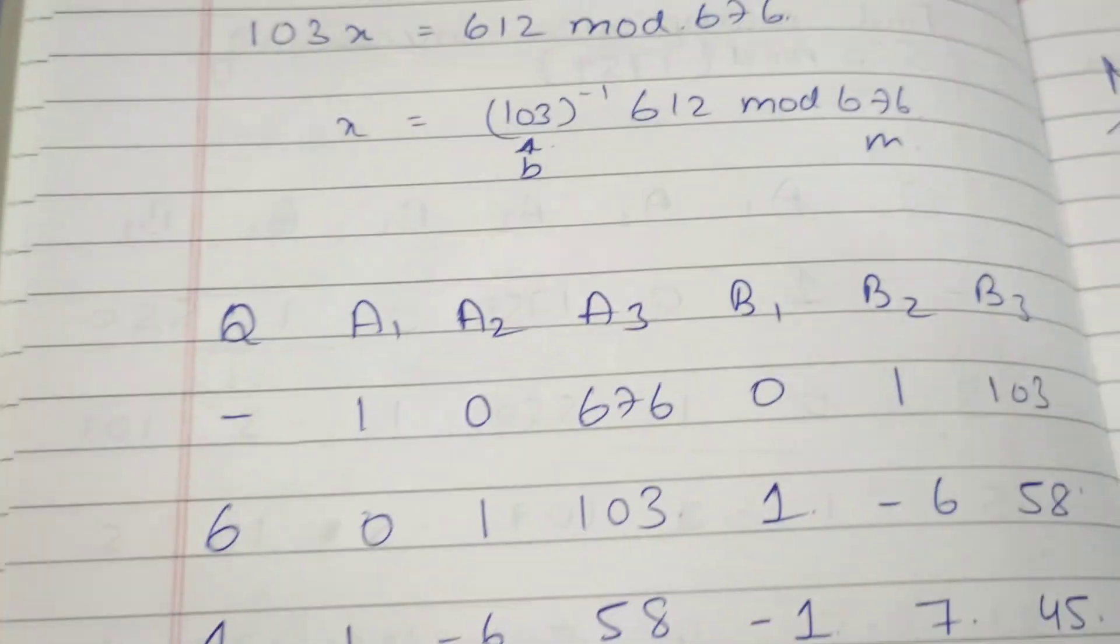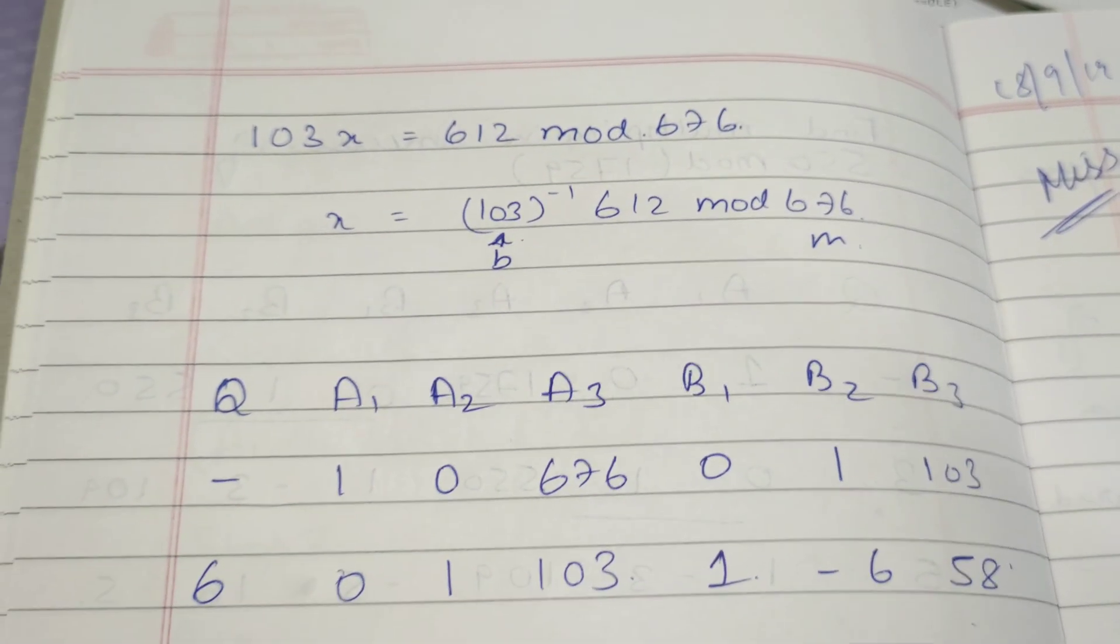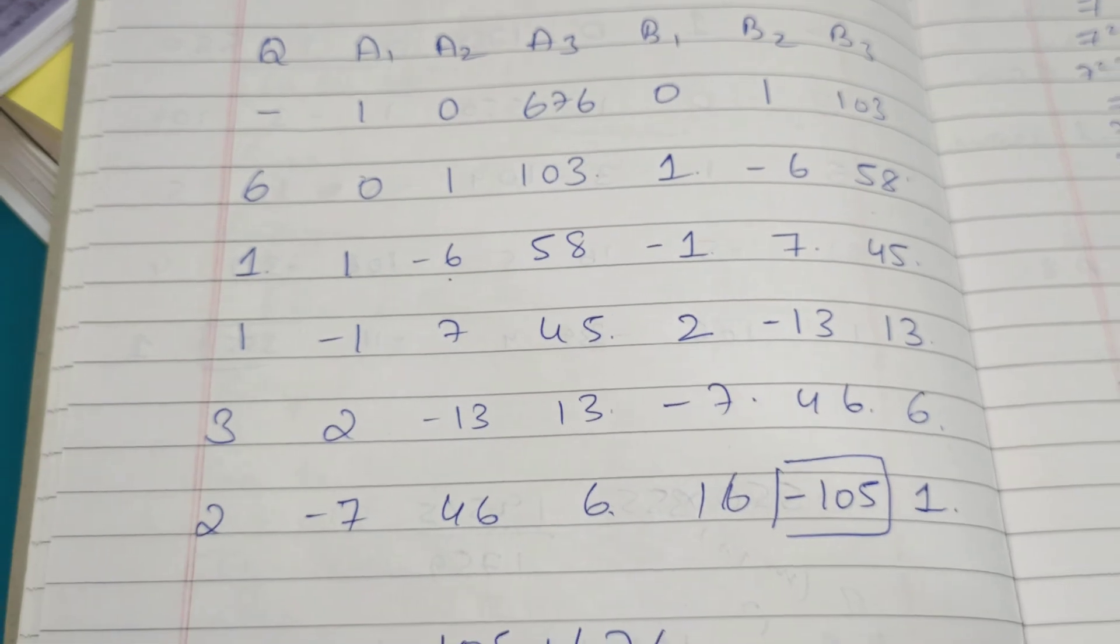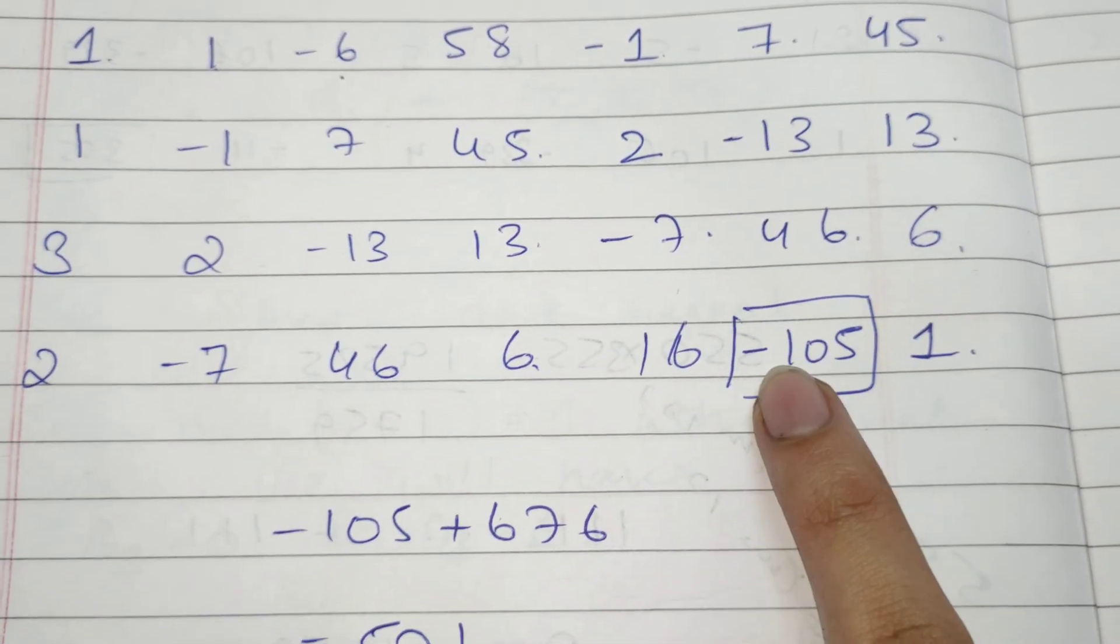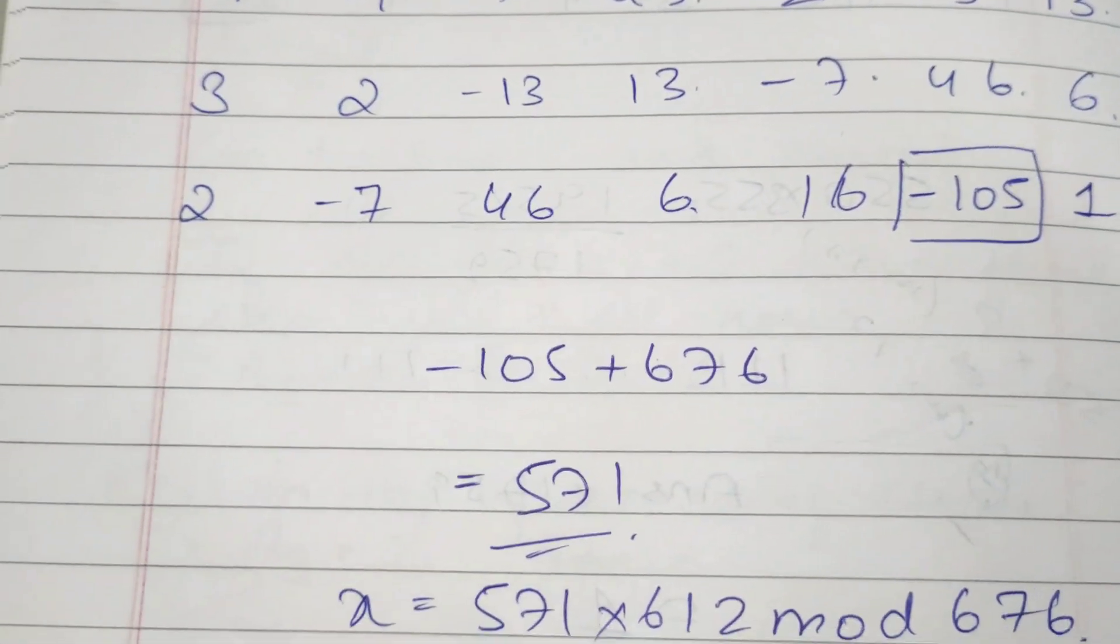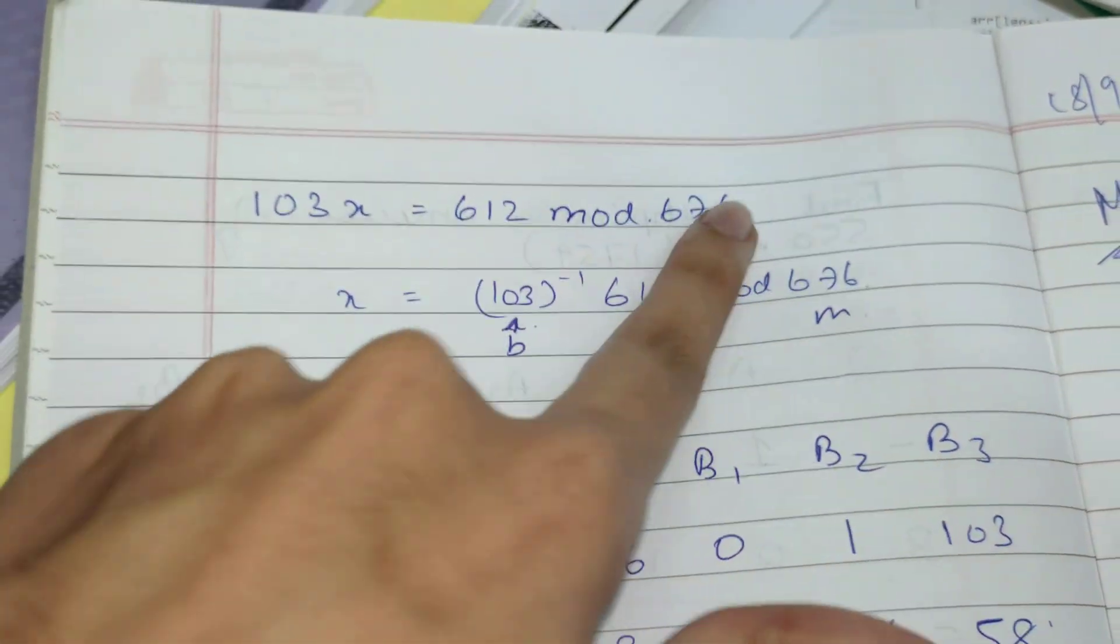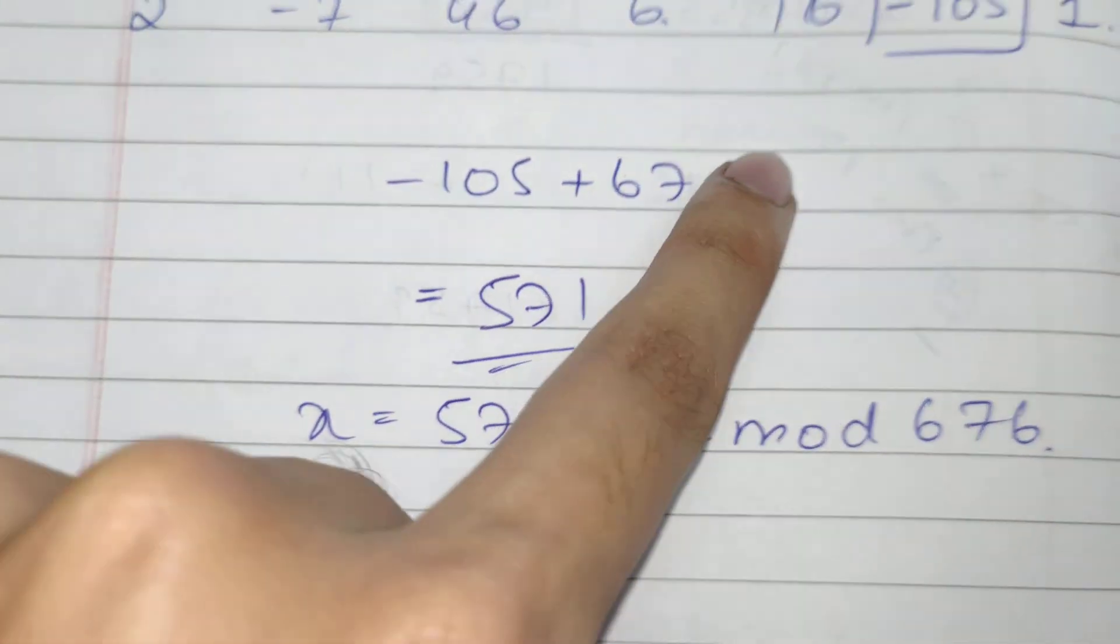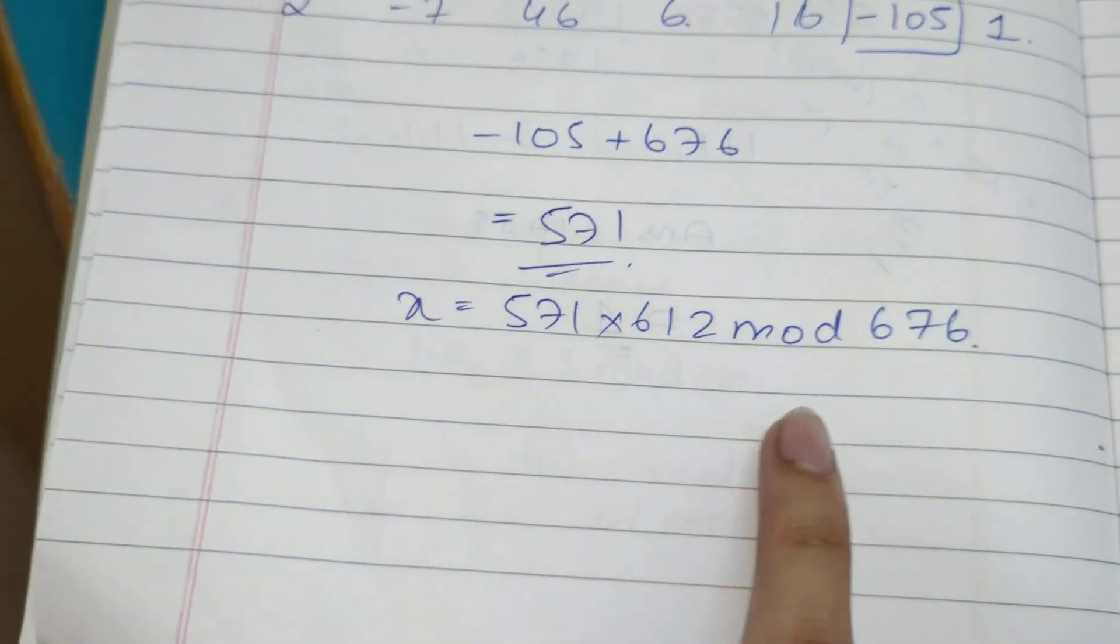If you want to practice one more question: 103x ≡ 612 mod 676. Same procedure. Here we got -105. When you get minus, you can't consider that, so what you do is -105 plus 676 to make it positive. Same process - if you find x = 571, that's the correct answer.